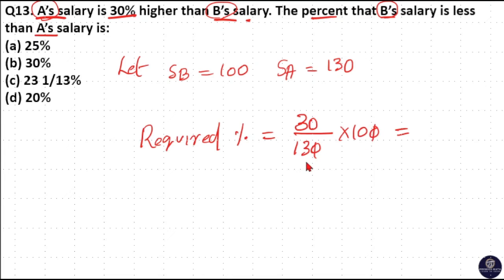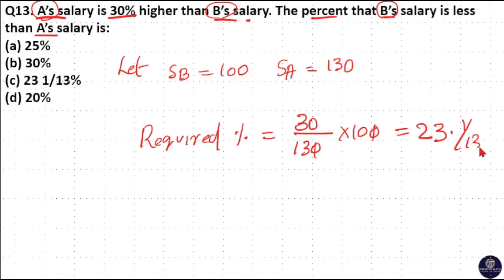The zeros cancel. 13 goes 2 times into 30 with a remainder of 4. Then 13 goes 3 times into 40, with a remaining of 1 by 13. So the answer is 23 and 1/13 percent.